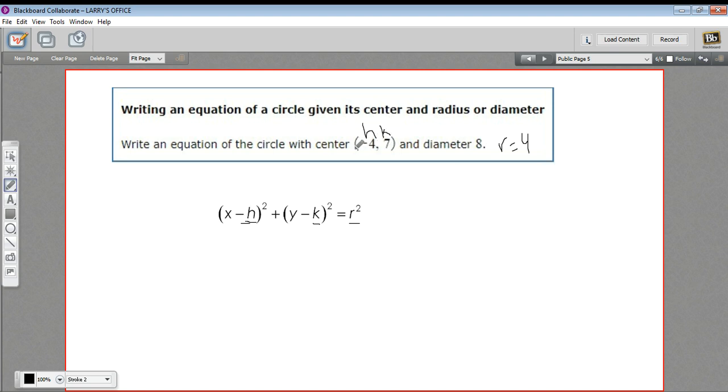You just have to be a little careful with the signs. h is negative 4, so x minus a negative 4 is x plus 4.